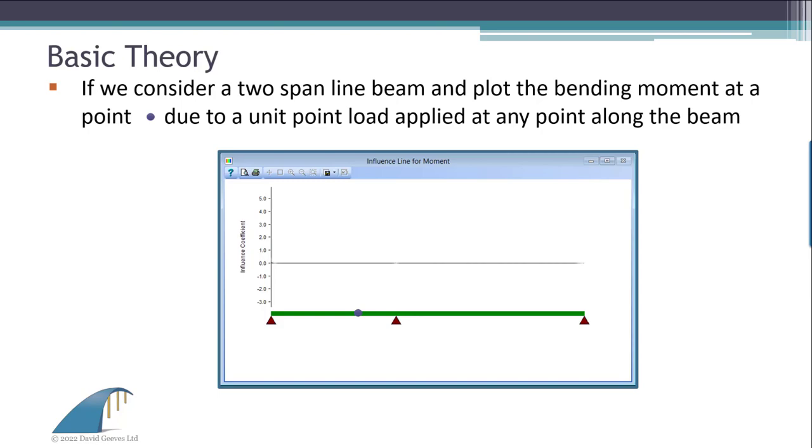If we model a two-span continuous beam and consider the flexural moment at a particular location due to the application of a unit point load at another location, we can plot the moment magnitude at this point at the location of the applied load.